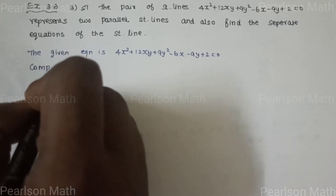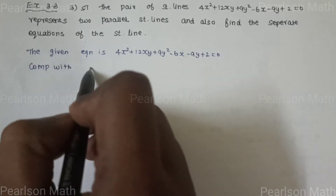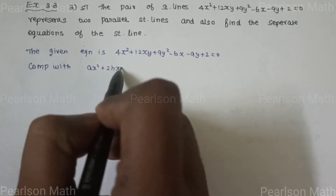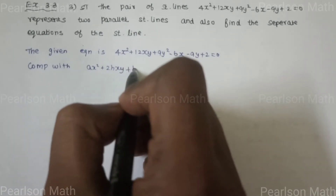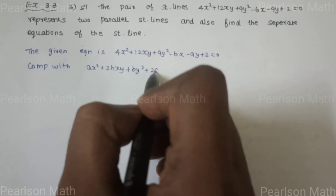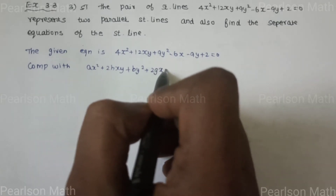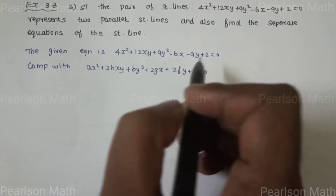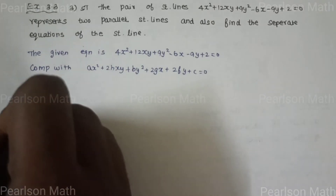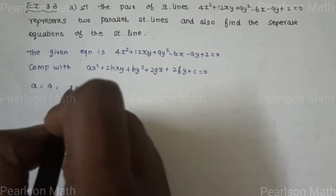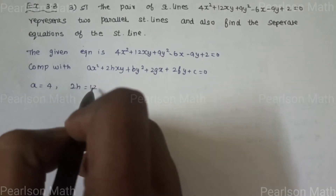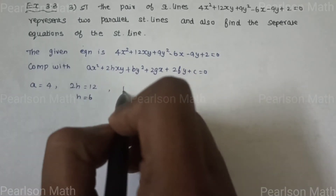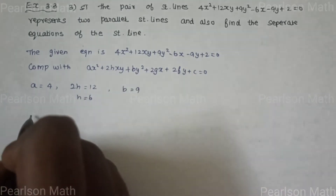Compare with ax² + 2hxy + by² + 2gx + 2fy + c = 0. So a = 4, 2h = 12 which gives h = 6, and b = 9.